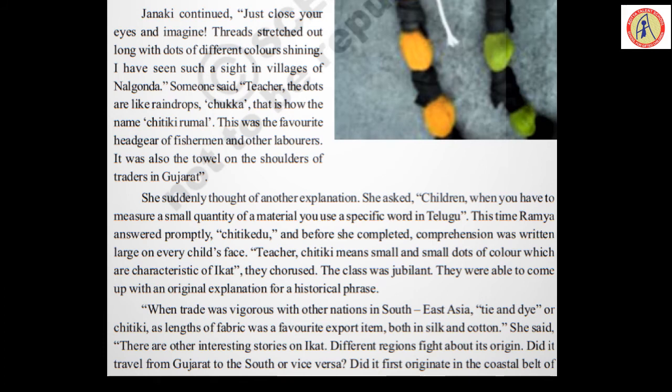She suddenly thought of another explanation and asked: Children, when you have to measure a small quantity of material, you use a specific word in Telugu. This time Ramya answered promptly: Chitikedu. And before she completed, comprehension was written large on every child's face. So when you measure a small quantity, you use a specific word — a very small quantity — in Telugu. Immediately Ramya responded: Yes madam, a small quantity is nothing but called Chitikedu.